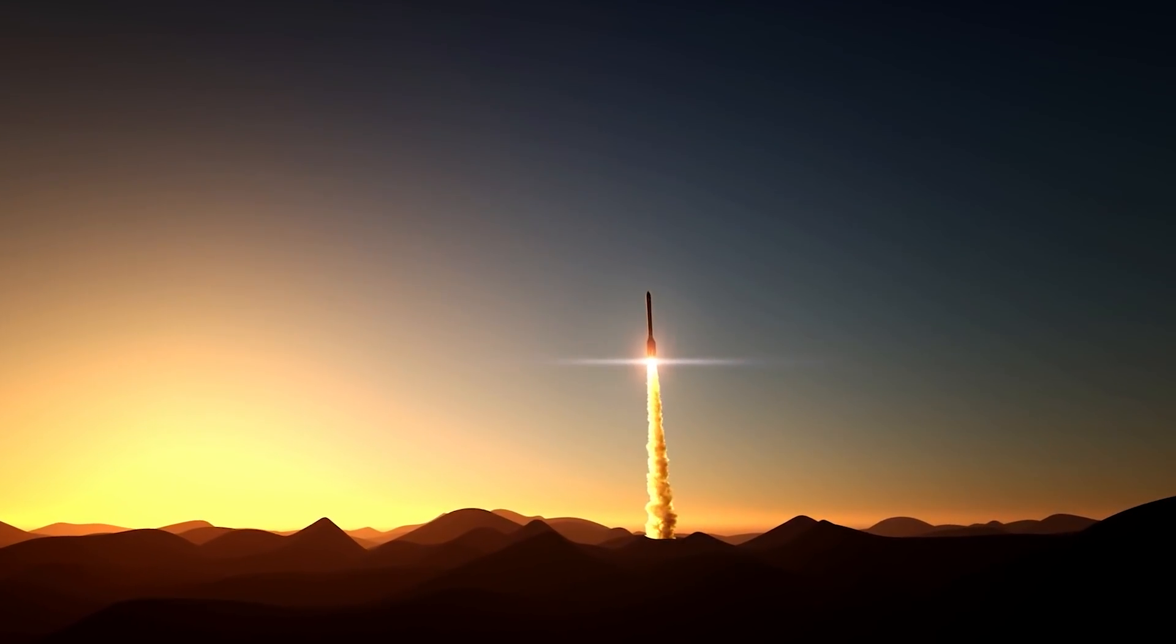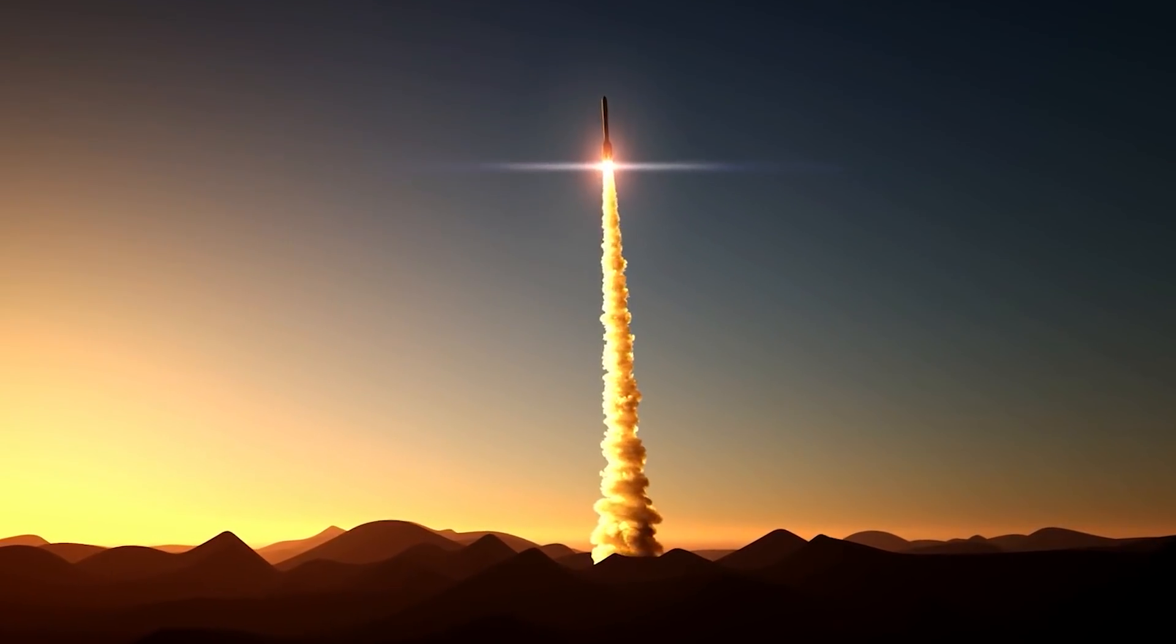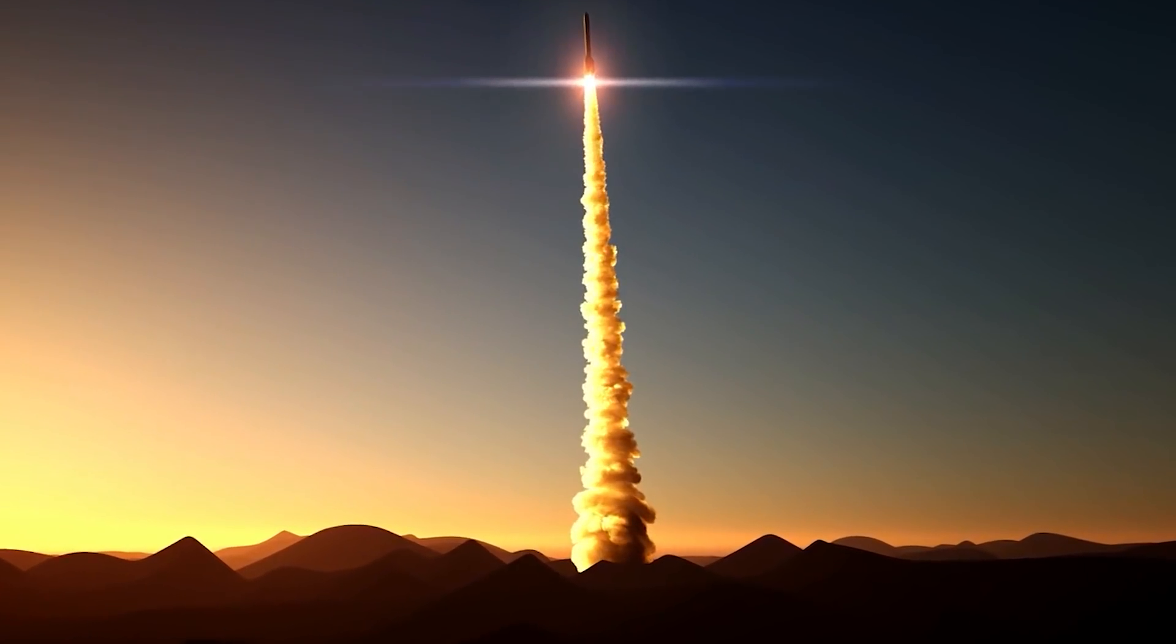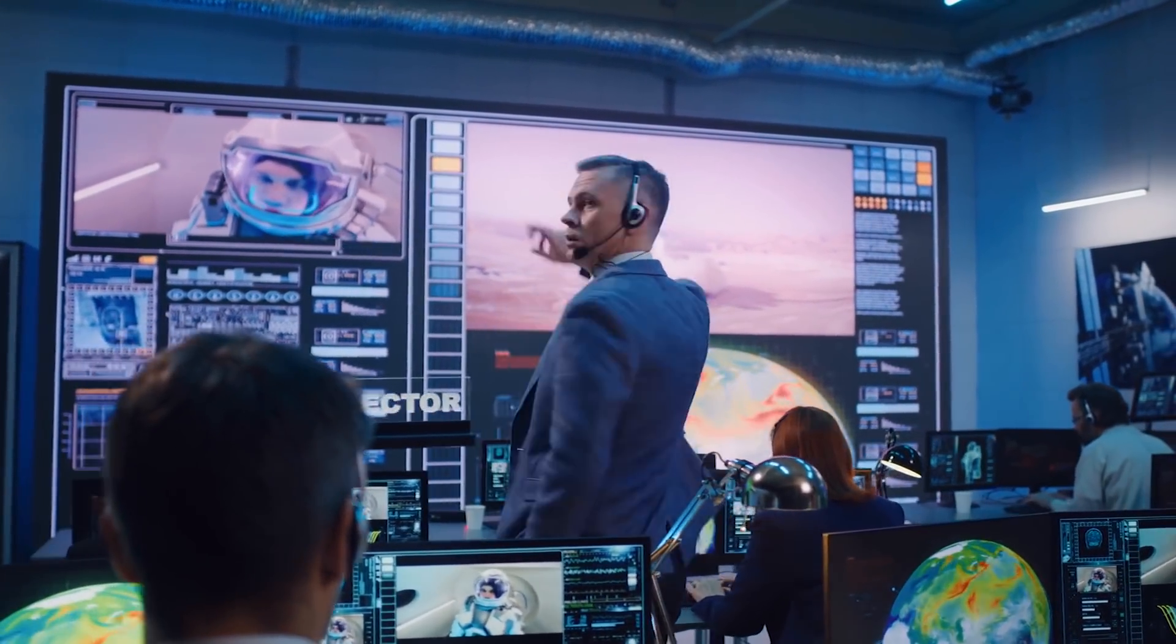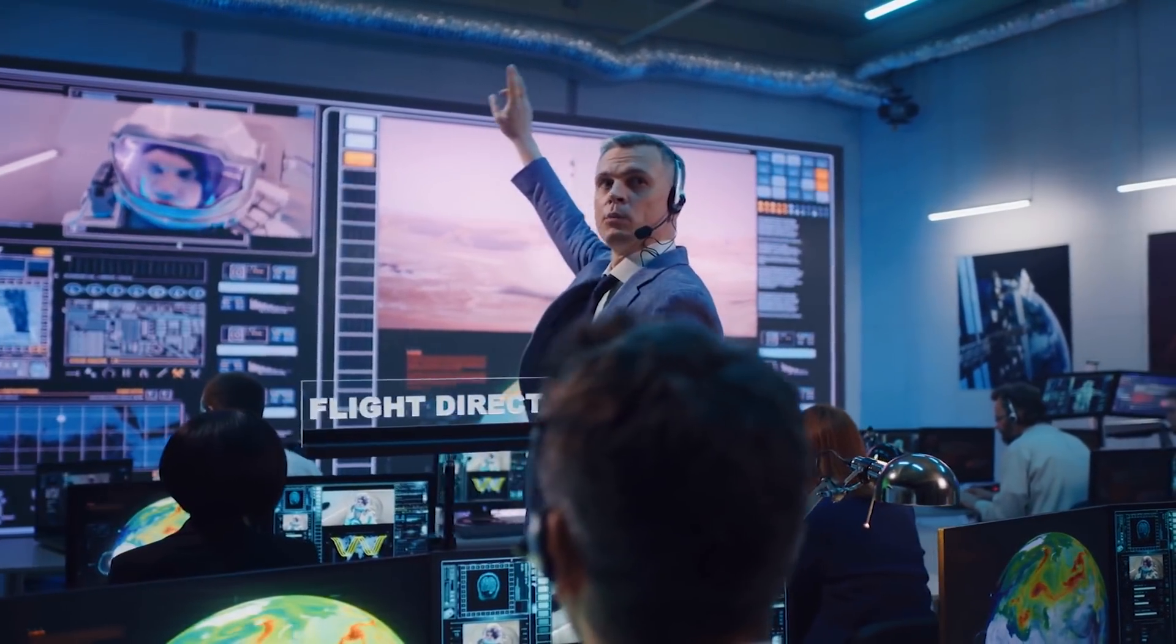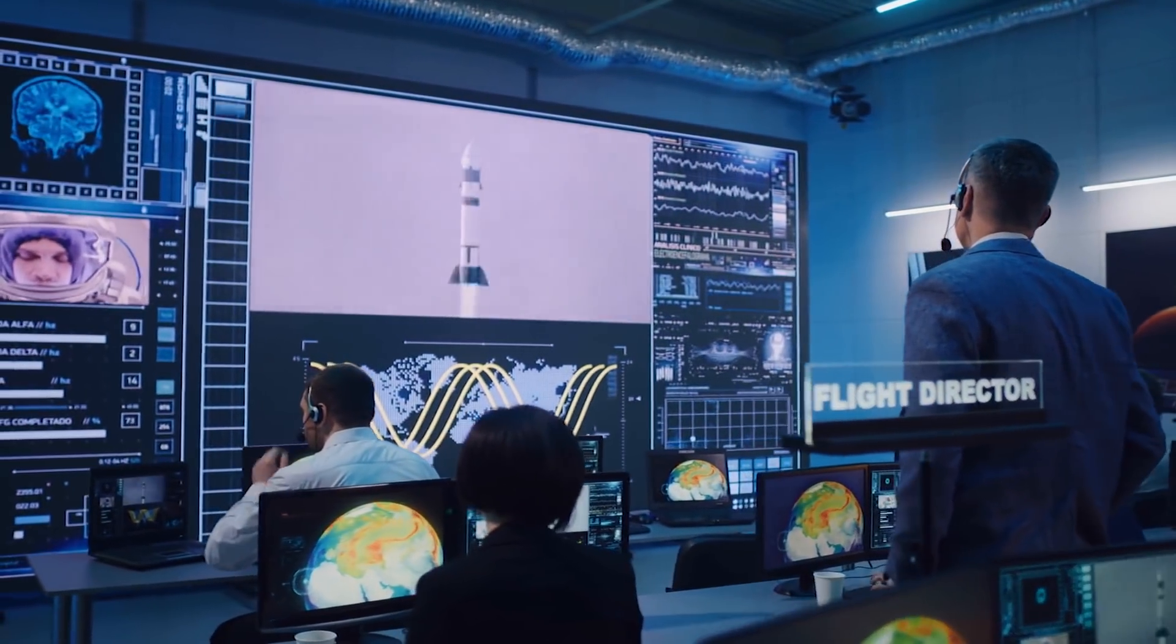The Starship SN8 flew to the skies with three Raptor engines, becoming the first full-scale Starship prototype to lift off with three Raptor engines. After reaching the maximum altitude of 12.5 kilometers, it flipped on its belly and had a controlled descent using its flaps and performed some fancy maneuvers before returning to the launch pad.